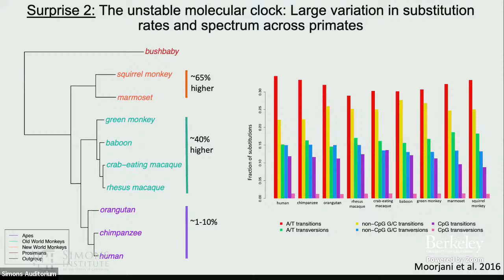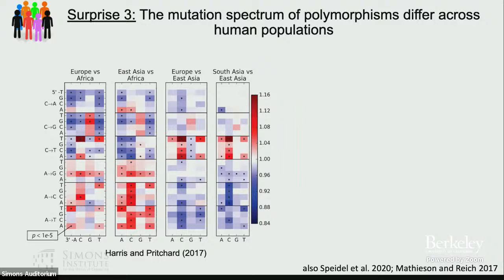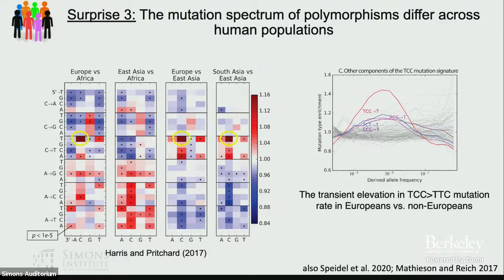A third surprise is that even across human populations there are differences in mutation rate, despite essentially identical base composition and replication machinery across humans. When you estimate the rate of C-to-A mutations or their proportions in different contexts across Europeans or Africans, the rates differ. One of the most significant differences is a mutation type called TCC-to-TTC mutations, which is present at about 20% higher frequency in Europeans compared to other non-European populations. This transient change has been suggested to be due to UV exposure or genetic modifiers.